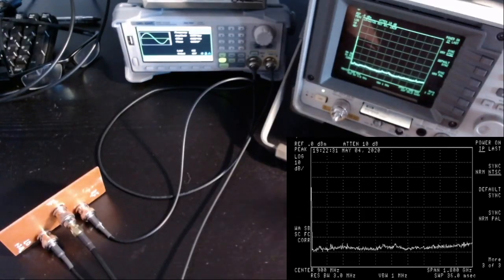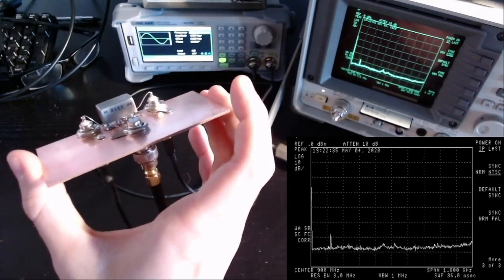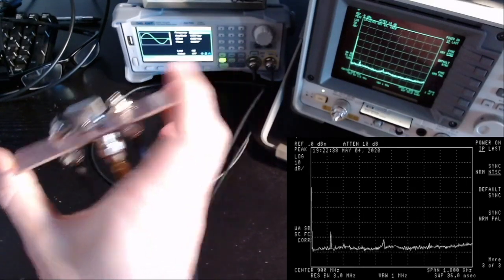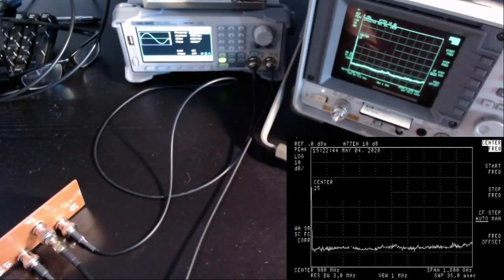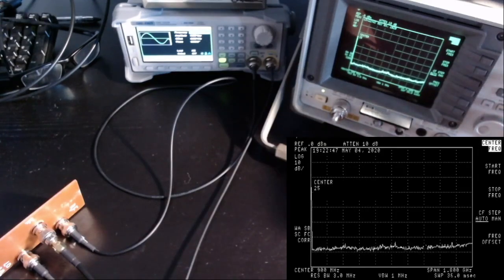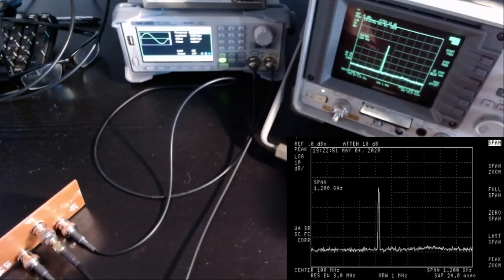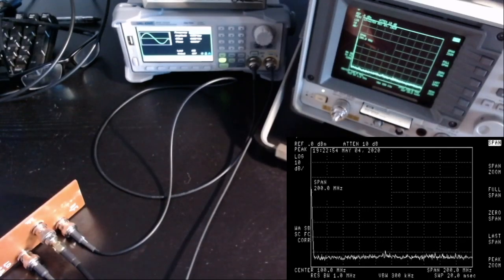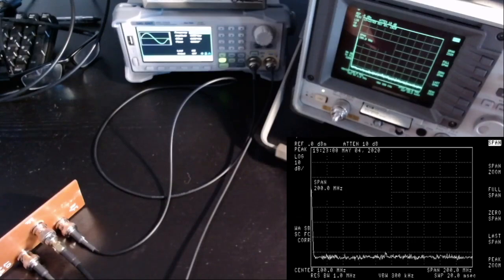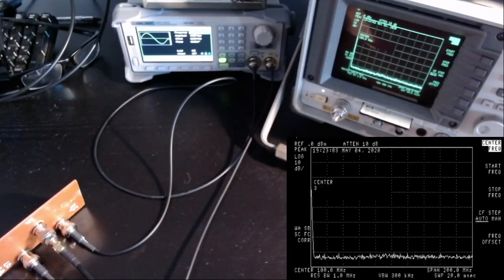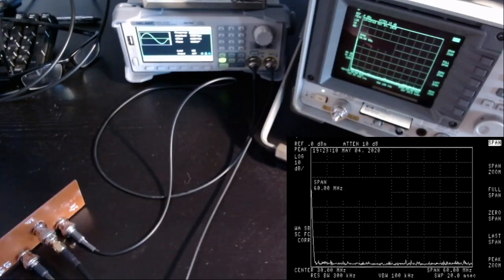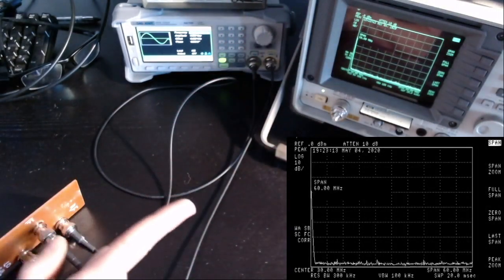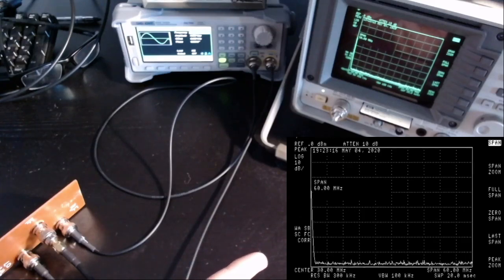This mixer is working from I believe half a megahertz to 500 megahertz. Let me reduce the span here. Frequency, let's say center frequency 100 megahertz and span of 200 megahertz. But in fact I want to reduce even more. I'm interested in low frequencies around the HF bands. So frequency, let me put 30 megahertz and span of 60 megahertz. Now we get the spectrum analyzer sweeping from 0 to 60 megahertz.